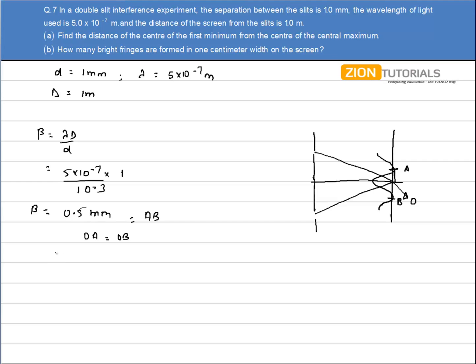I have to calculate the distance OA. Clearly OA will be equal to OB. So I can write 2 times OA equals AB. So the value of OA comes out to be 0.5 by 2, that is 0.25 mm. That is the answer, because that is the distance between the first minima and the central minima.